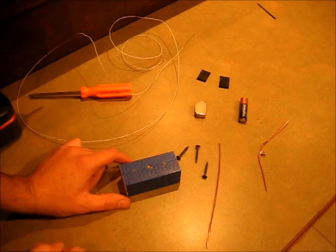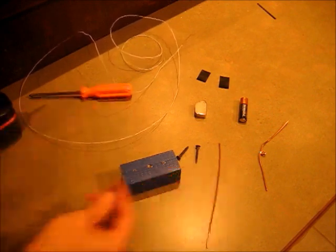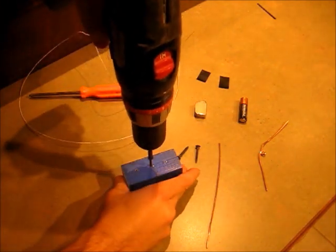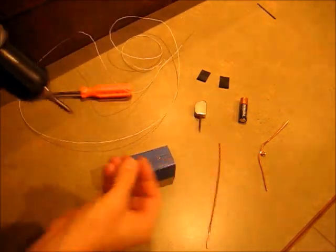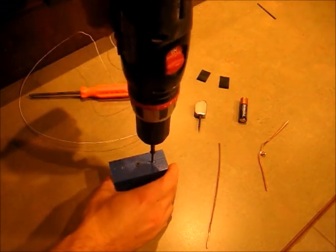First take a little block of wood and drill three pilot holes in it about an inch apart, and then put screws in it. First one all the way down and the second two let them stick up about a quarter inch.